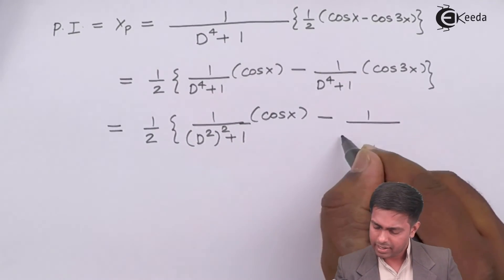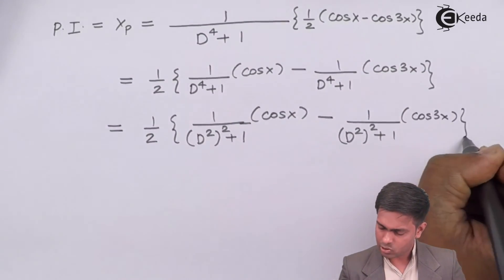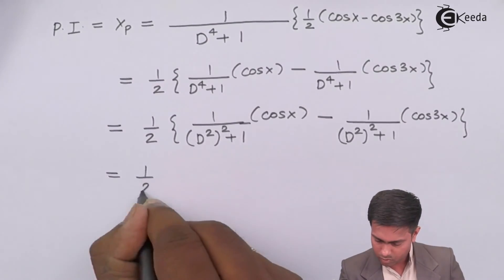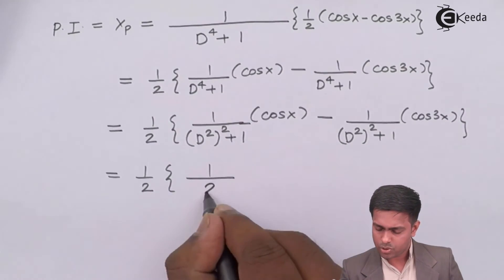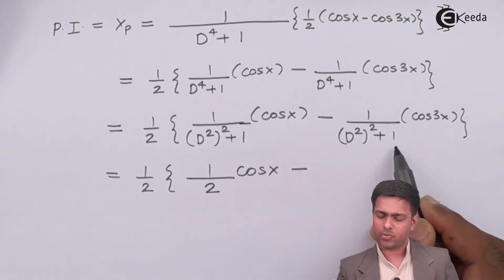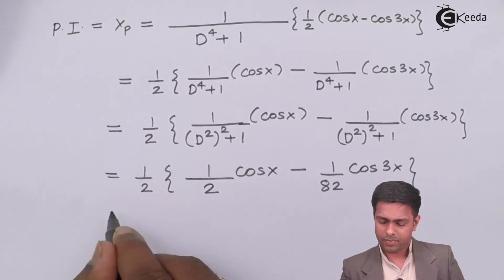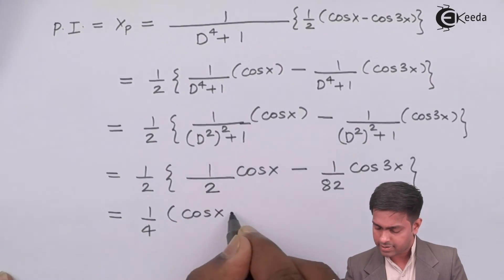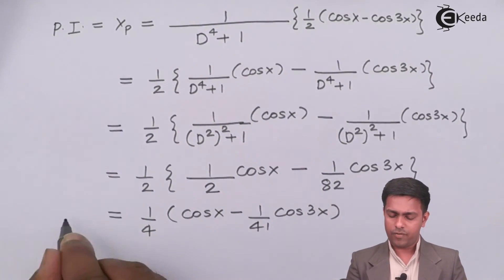Substituting d² = −1: (−1)² + 1 = 2, giving (1/2) cos x. For cos 3x, d² = −9: (−9)² + 1 = 81 + 1 = 82, giving (1/82) cos 3x. Including the ½ factor outside, the particular integral is yp = (1/4)[cos x − (1/41) cos 3x].